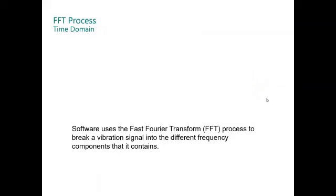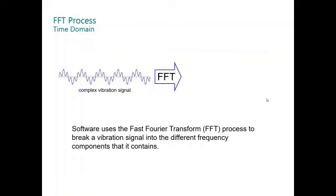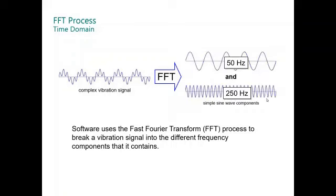One of the signal processes is using the FFT or Fast Fourier Transform. This converts the time domain into frequency domain and is called spectrum. You have a complex vibration signal. Using the FFT, it's converted, in this case, into two components: one component at 50 hertz and the second at 250 hertz.